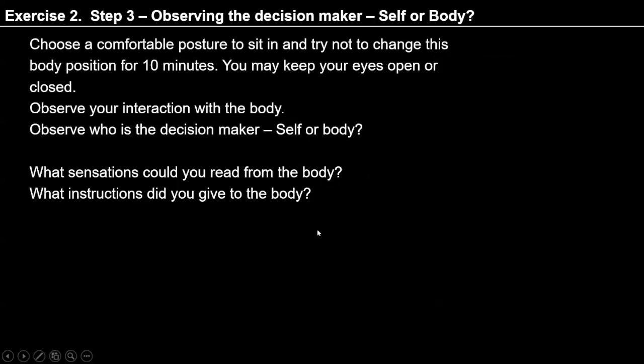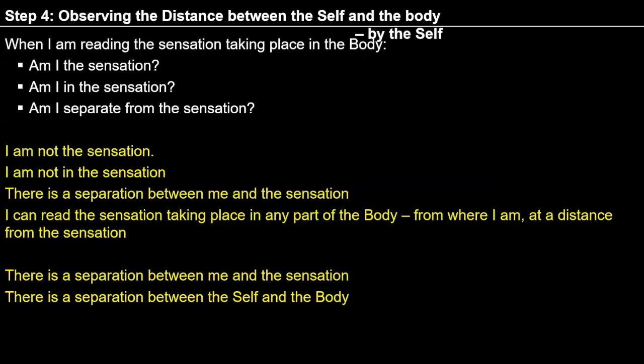Body is my instrument. In step 4, we are trying to observe the distance between the self and body. When I take a decision to read a particular sensation in the body, I am asking: Am I the sensation? Am I in the sensation? Am I separate from the sensation? Step 4 helps us realize that I am separate from the sensation. That's why I am not bound to read all sensations — I read sensation with my decision when I think it is important. Otherwise, I have the choice not to read the sensation.